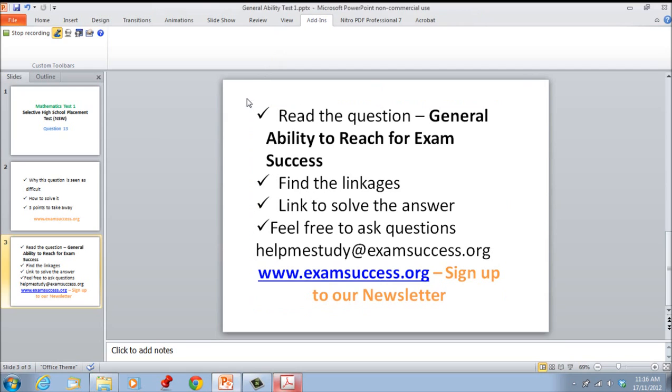First, read the question. The general ability guide for exam success, which you can download off selectivetest.net immediately, goes through the reading the question area. This will assist you in deciphering where the missing link is and being able to match it with your information to find the solution. For me, I think reading the question is a key skill you need to develop in order to answer general ability questions quite well.